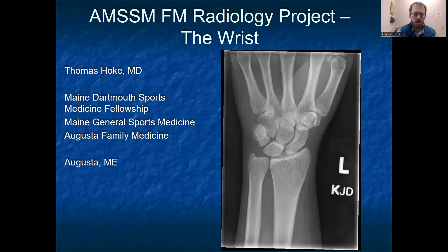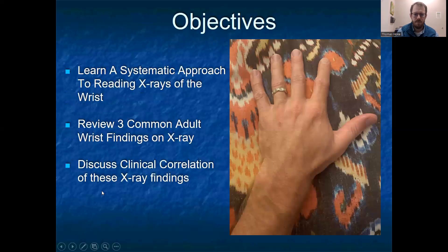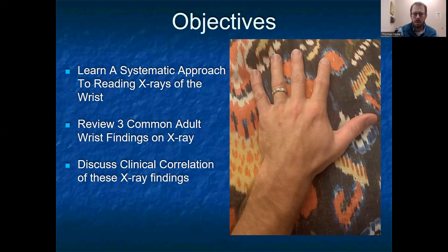I have no disclosures regarding this topic. My objectives here are to: number one, learn a systematic approach to reading x-rays of the wrist; to review three common adult findings that we typically see on x-ray within our family medicine and sports medicine clinics; and then discuss the clinical correlation of these x-ray findings.